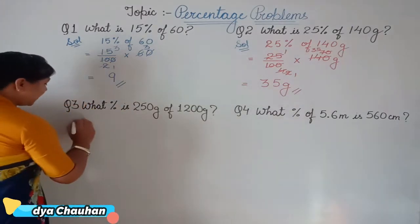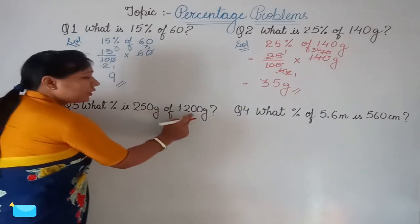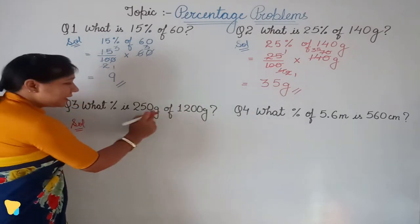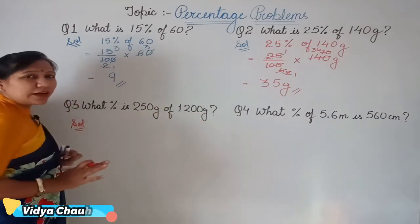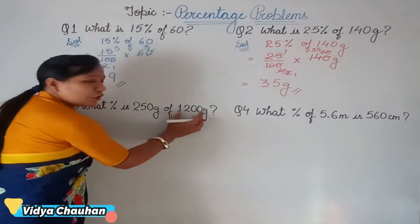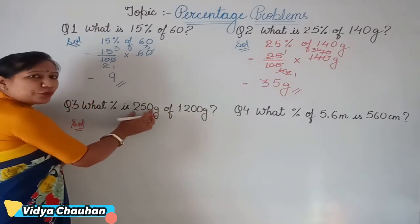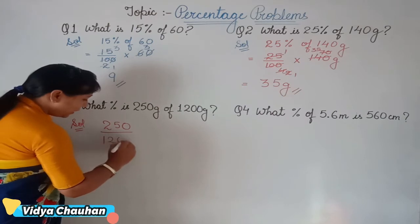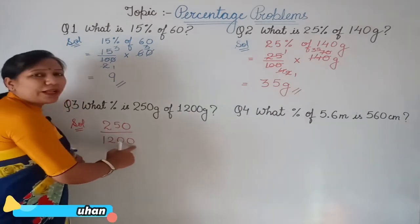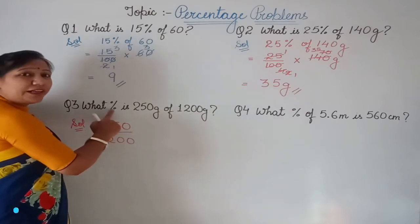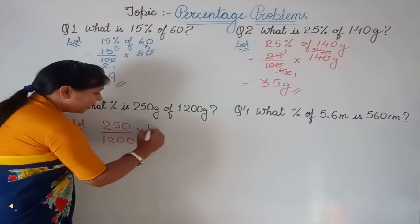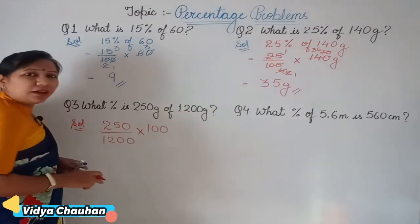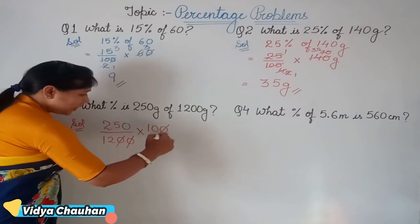To find this, since both units are the same (grams), we write it in fraction form: the value taken out is 250, the total value is 1200, so we write 250 upon 1200. Since we have to find the percentage, we multiply by 100 to convert to percentage.